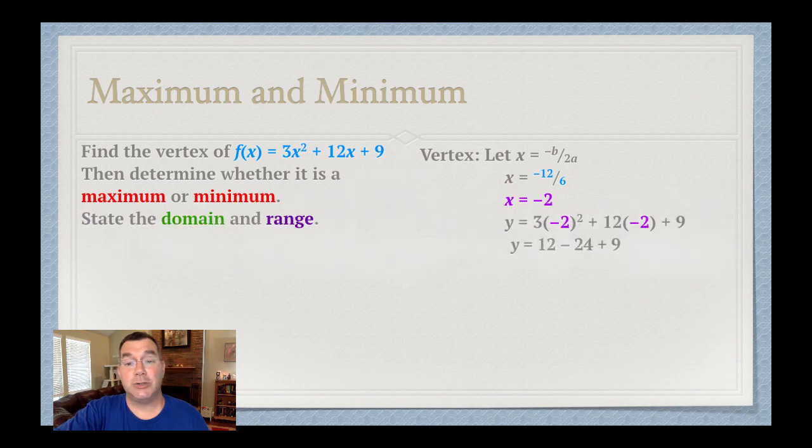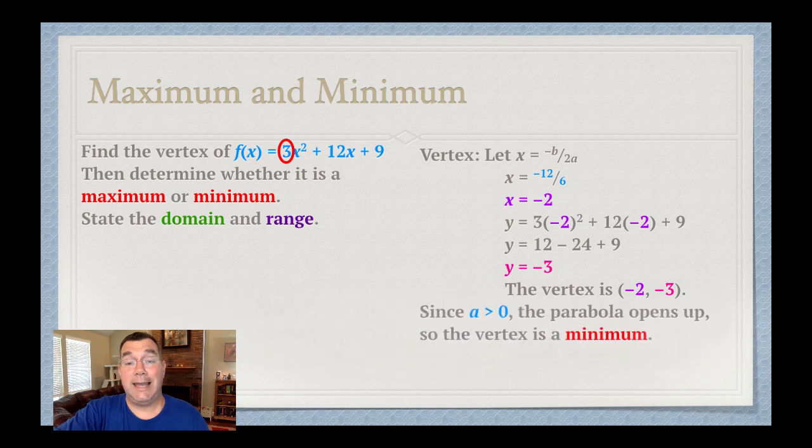That means that my x-coordinate of my vertex is negative 2. I plug that into the original function, and I get a y value of negative 3. That means that my vertex is at negative 2 and negative 3. Now again, since my a value is positive this time, that means that the parabola opens up, meaning that the vertex is at the very bottom of the parabola, making it a minimum.